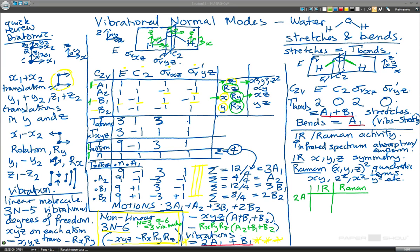2A1 and B1 and they are all active like so. Okay. So that's a sort of handy way of representing the activity and so what that means is that in an infrared spectrum you would expect for water to see three vibrational modes contributing to that spectrum and in a Raman spectrum for water you'd also expect to see the same three vibrational modes contributing.